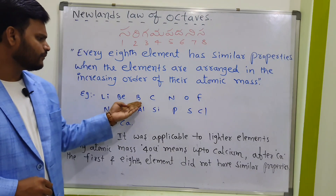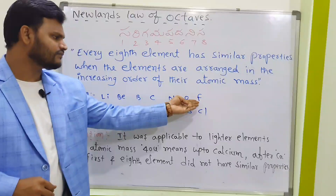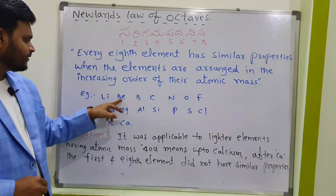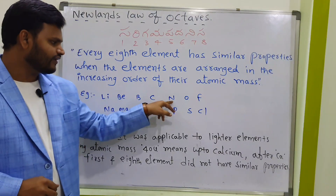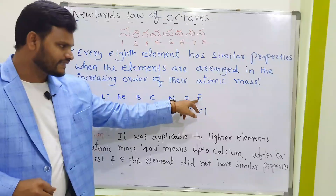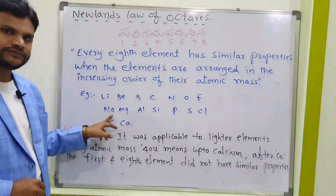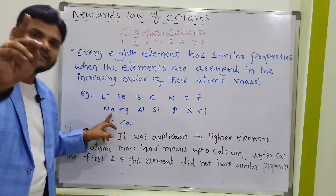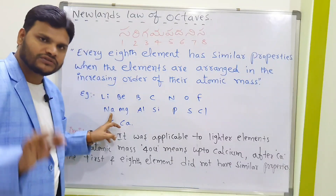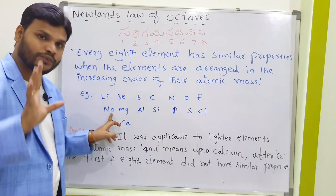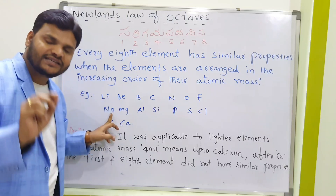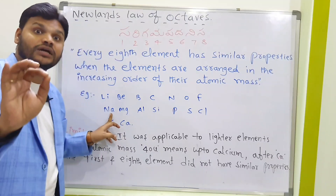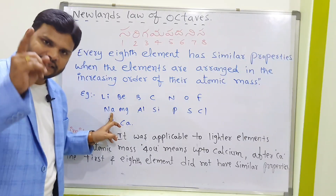For example: lithium, beryllium, boron, carbon, nitrogen, oxygen, fluorine, sodium. Counting: 1, 2, 3, 4, 5, 6, 7, 8. Lithium is the 1st element and sodium is the 8th element. Lithium and sodium have similar properties because both belong to Group 1A and both are alkali metals.